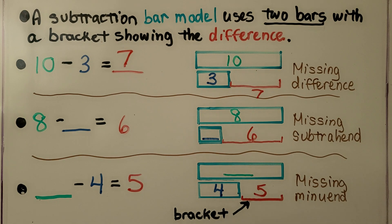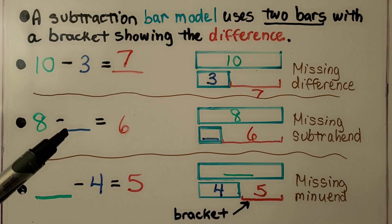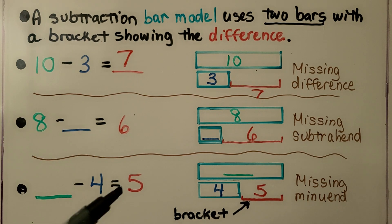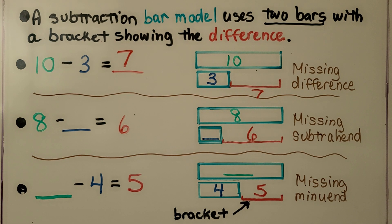Here we have 8 minus some number is equal to 6. Do you know what the missing number is? If you said 2, you're correct.